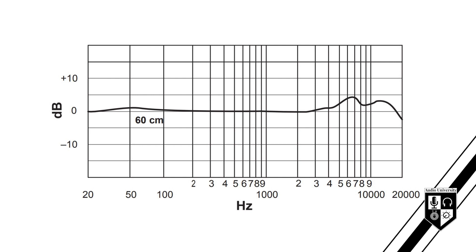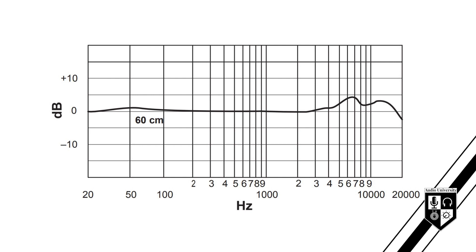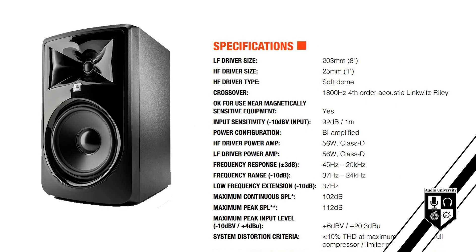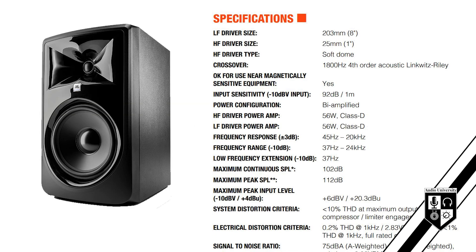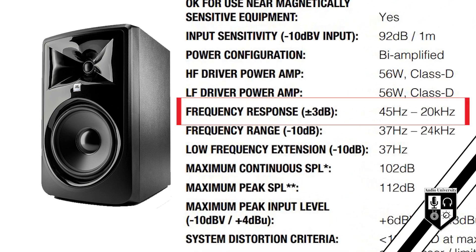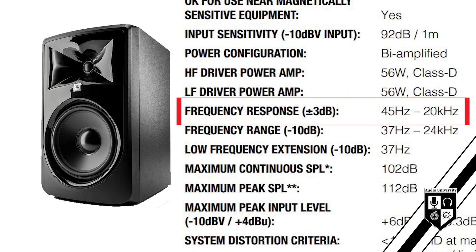Frequency response graphs are the most valuable way to interpret frequency response because they not only show the frequency range, but they show the relative level within that range. Often, technical specifications don't include a frequency response graph. In this case, frequency response might be shown like this — stating the frequency range in addition to a very important piece of information called the tolerance.